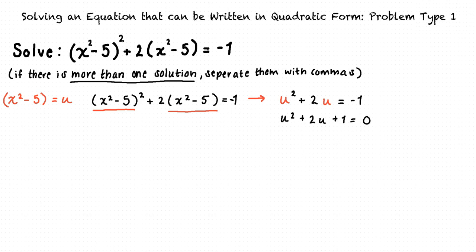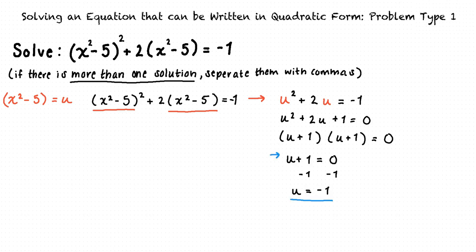Now, we can factor this equation: u plus 1 times u plus 1 equals 0. Next, we will solve: u equals negative 1.